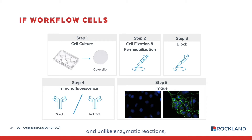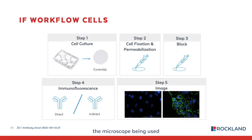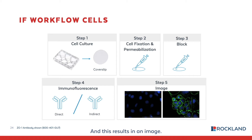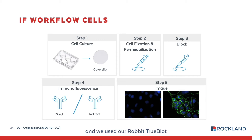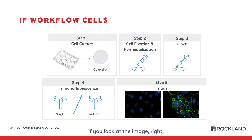Unlike enzymatic reactions as seen in traditional IHC, we do not need a chromogen. Instead, the fluorescent microscope excites the dye at a specific wavelength, and that dye emits light at a different wavelength, resulting in an image. In the example shown in step five, the ZO1 antibody is used as the primary, with a rabbit TrueBlot FITC conjugated secondary antibody producing a greenish color. The green represents the ZO1 protein.